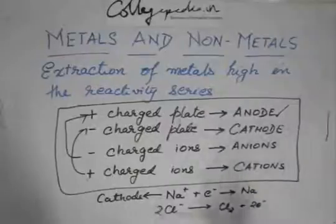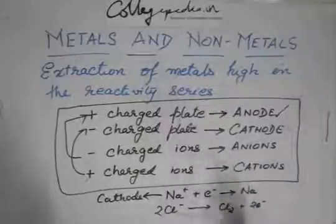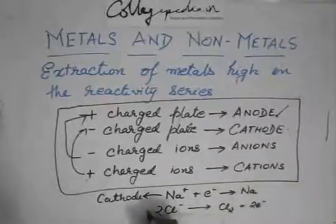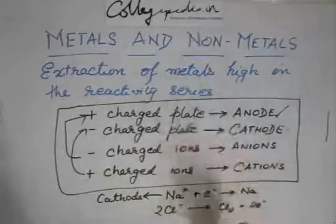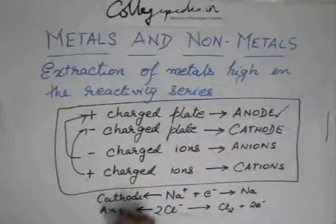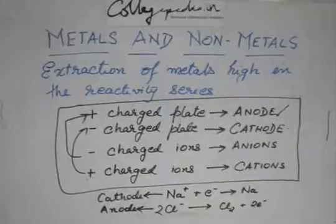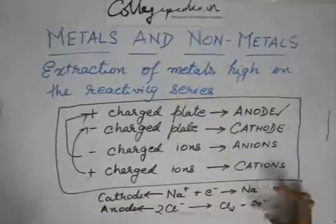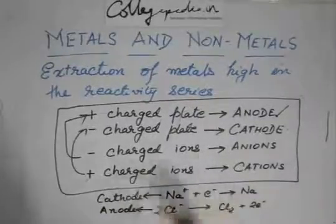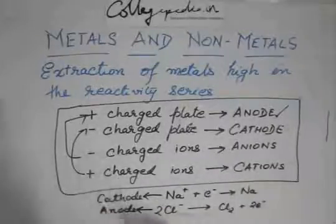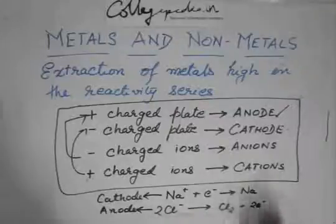And the second reaction is giving away negative charge, so there has to be a positively charged plate to take the negatively charged electrons. The positively charged plate is the anode. So this reaction takes place at the anode. To summarize: Na⁺ + e⁻ → Na takes place at the cathode, and 2Cl⁻ → Cl₂ + 2e⁻ takes place at the anode.